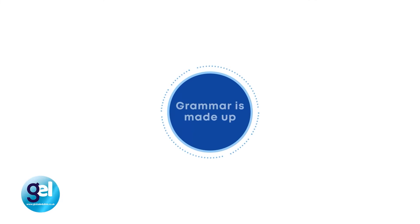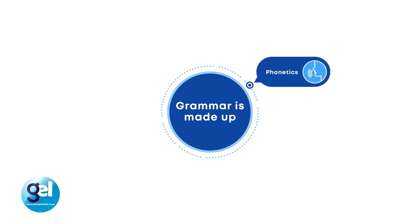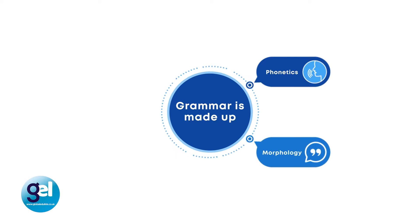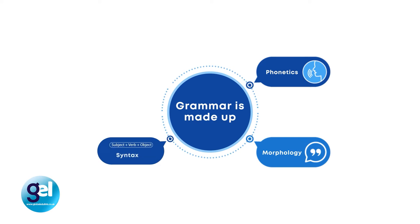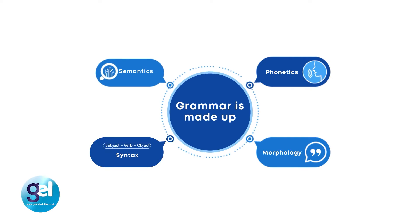So grammar — what is it made up of? Firstly, phonetics: the sounds, the structure of sounds. Secondly, morphology: the structure of words. Thirdly, syntax: the structure of sentences. And lastly, semantics: the meaning of words in sentences.